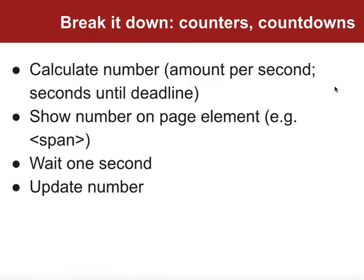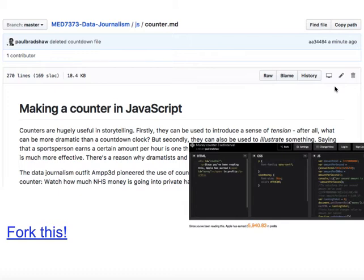Let's look at counters and countdowns. If we break those down in terms of challenges, the key technical challenge is to calculate a number — such as an amount per second or the number of seconds left until a particular event. We then need to show that number on the page in some sort of page element, for example a paragraph tag or a span tag. We then need to wait for a period of time — a second for example — and then change that number. That's essentially how a counter works. With a countdown it starts at a particular number and counts down. In the GitHub repo you'll find a description of how to create a counter in JavaScript with some example code on CodePen.